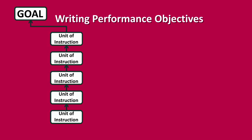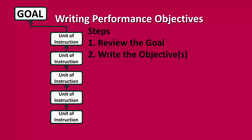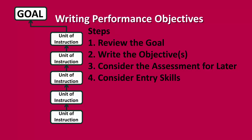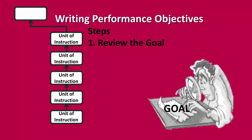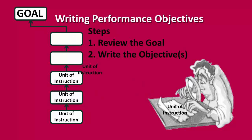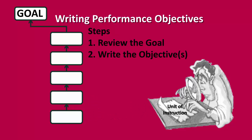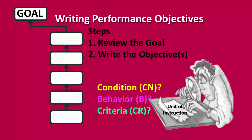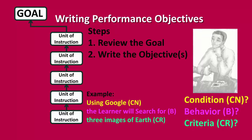The process for writing objectives includes reviewing the goal, writing the objective, considering the assessment for later, and considering entry skills. First, the designer should review the goal and ensure that it has a description of the ultimate concept — if it doesn't, the goal should be rewritten. Next, the designer should write a terminal objective for each unit of instruction, ensuring that each terminal objective includes the three parts: a condition, a behavior, and criteria. This process should include writing objectives for subordinate skills as well.